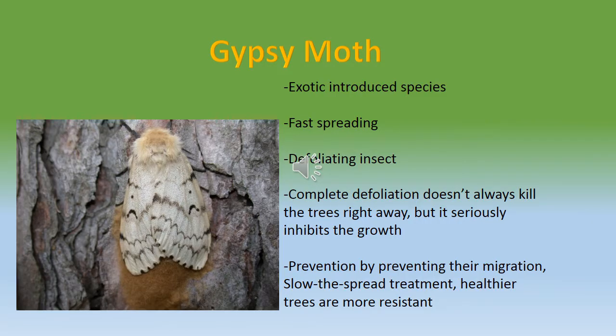The gypsy moth was an exotic introduced species from Europe in 1869, originally brought over to be part of a silk-making experiment, but eventually the species was let loose. It spread from the Mid-Atlantic to Virginia and North Carolina, as well as Wisconsin and Michigan. It spread so fast because they spread their larvae and eggs by laying them on trucks and objects that move, carrying the gypsy moths to different areas in the United States.